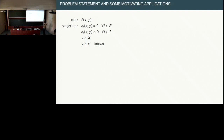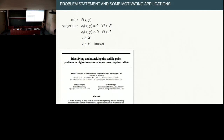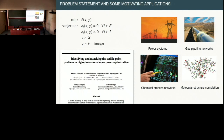Our generic MinLP has an objective function and a set of constraints which can be either nonlinear non-convex or linear, and a subset of constraints can be equality or inequality. We assume there is a set of variables which are integers — for this presentation let's assume they are binary, though we are looking at extensions for integer variable formulations. MinLPs appear in many applications, especially in machine learning for finding saddle points in high-dimensional non-convex optimization, as well as infrastructure networks like power systems, gas pipeline networks, chemical process networks, pooling and blending problems, and molecular structure completion.